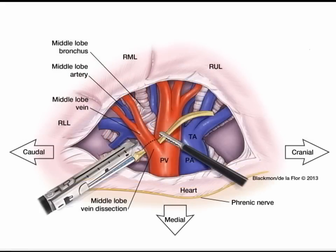For a thoracoscopic right middle lobectomy, the approach is slightly different than that for a right upper or right lower lobe. The structures are similar from the back and you should perform the posterior dissection of the pleura first. Once that has been performed, approach from the anterior aspect of the hilum. By dividing the pleura and taking care to preserve the phrenic nerve, you can encircle and dissect the pulmonary vein, making sure that you do not have a common vein and that you have only the superior pulmonary vein.